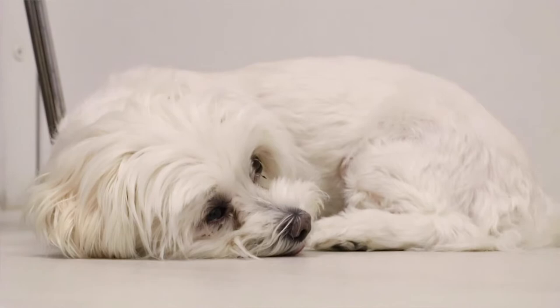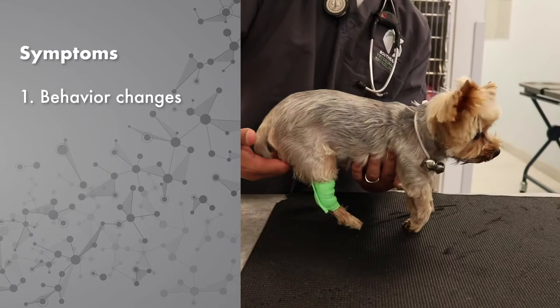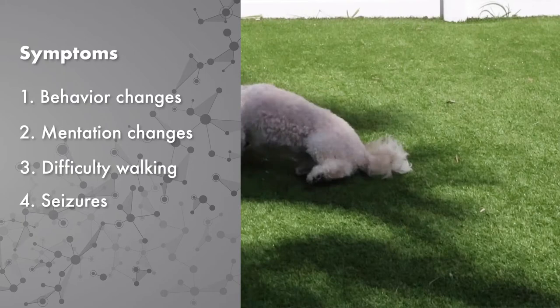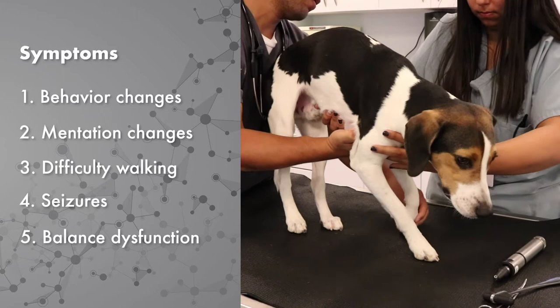The clinical signs seen in a patient suffering from MUO are really varied and depend on the part of the brain being affected. Common signs include changes in behavior, changes in mentation, changes in their ability to walk, seizure activity, and even balance dysfunction. Sometimes combinations of signs can be seen all at once because multiple parts of the brain are being affected.